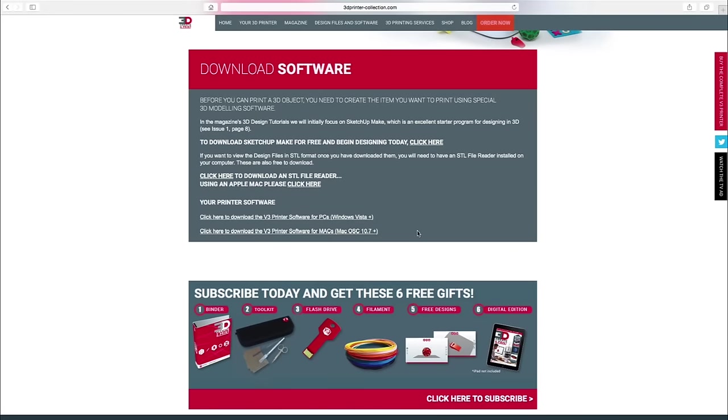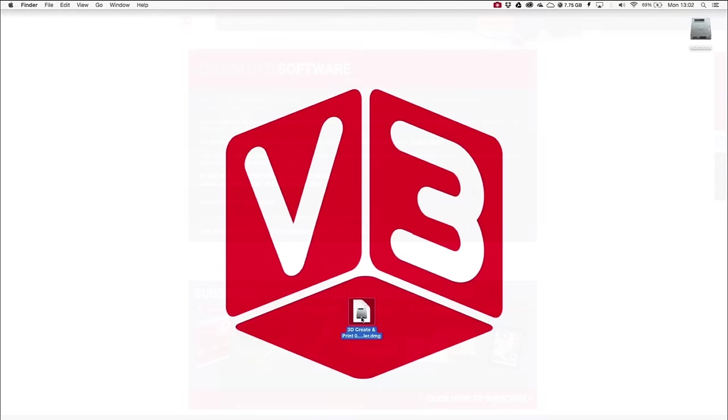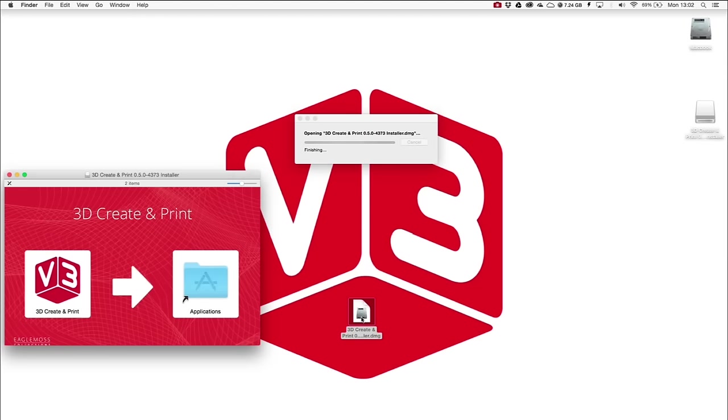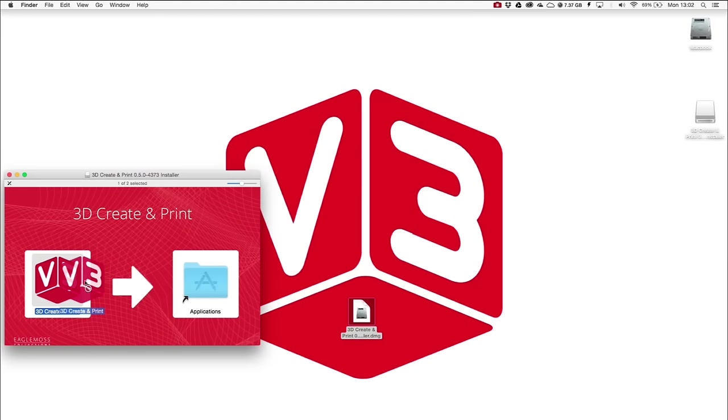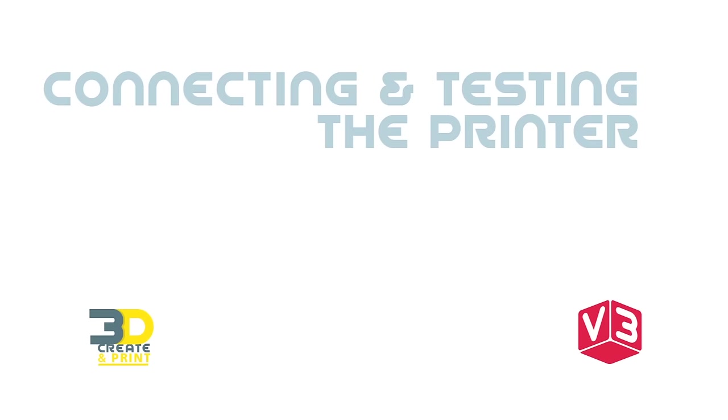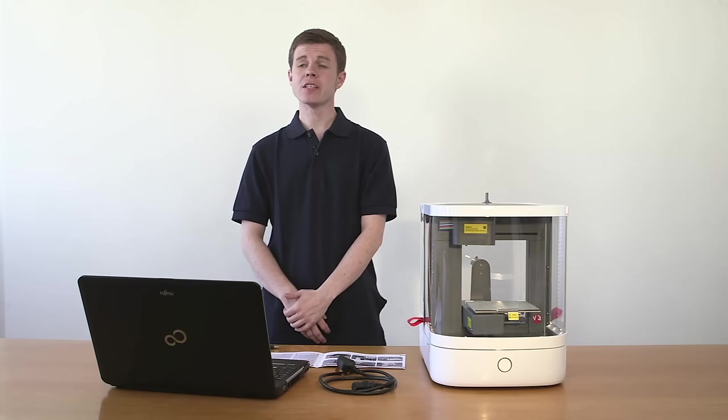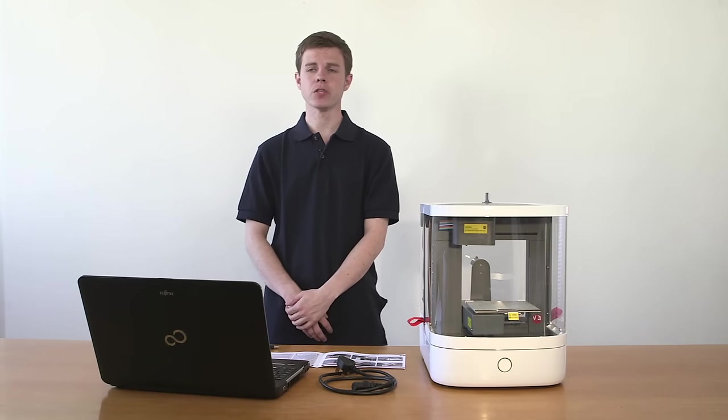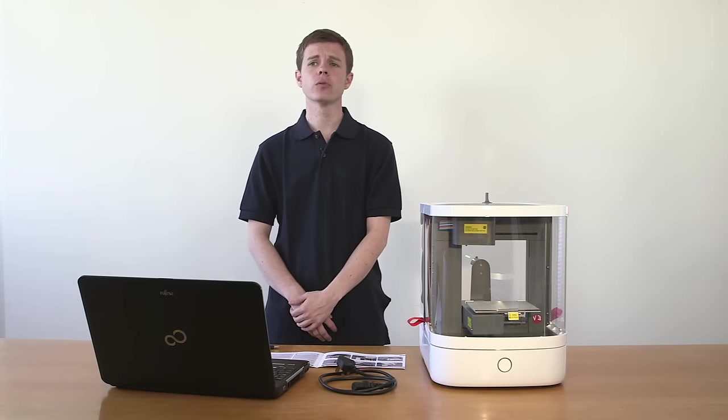To download and install for Mac, double click the download link, double click the installer, drag the 3D print app into the applications folder. You're now ready to connect the printer to your computer. When you do so, you'll need to identify a USB port for the printer's use. Here's how.